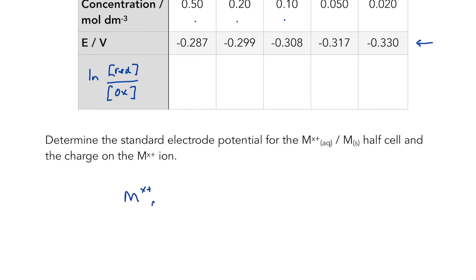Mx+ aqueous plus x number of electrons goes to form our metal. So once again, metal is the reduced species, and that is a bigger metal having concentration we can take it to be unity. The concentration is going to be one, and we have our varying concentrations of Mx+.